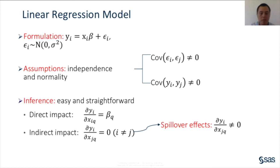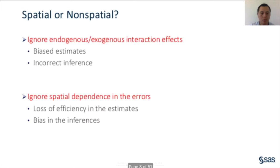Although the classical linear regression model is often used, it is not suitable for modeling spatial data. The key assumptions of uncorrelated errors and independent observations can be violated by spatial data due to spatial dependence. In addition, spatial data often exhibits spillover effects, allowing an explanatory variable to have indirect impacts on the dependent variable. When the assumptions break down, the estimates and inference from the classical linear regression model can be biased and misleading.